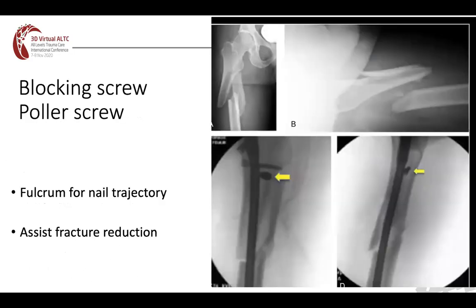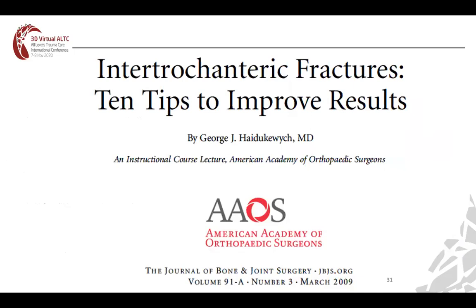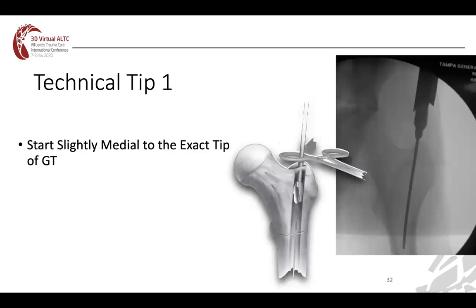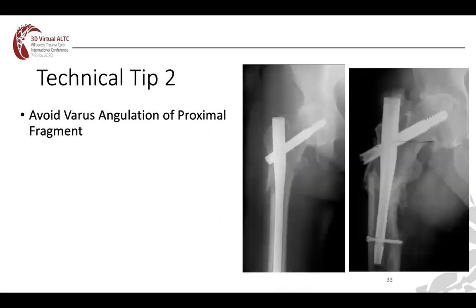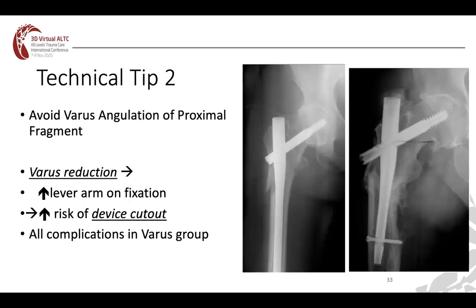You can use blocking screws or polar screws — they act as a fulcrum for nail trajectory, assisting fracture reduction while passing the nail. Technical tip number one when using a trochanteric entry nail: start slightly medial to the exact tip of the greater trochanter, because the more you go laterally, the more this will lead to a varus reduction of the proximal fragment. Most papers confirm that varus angulation of the proximal fragment increases the lever arm on the fixation and increases the risk of device cutout. A paper by Shukla et al. published in Injury 2007 found that all complications happened in the varus group.